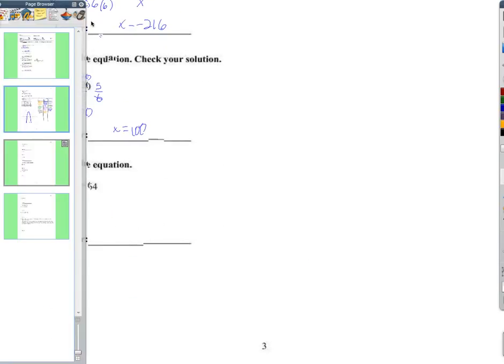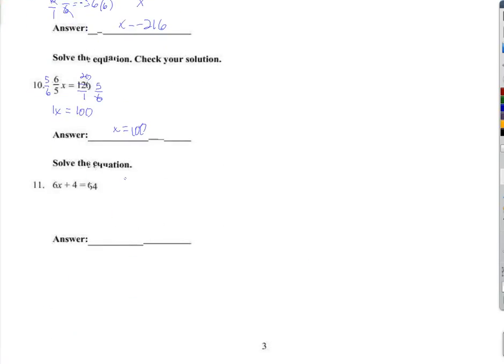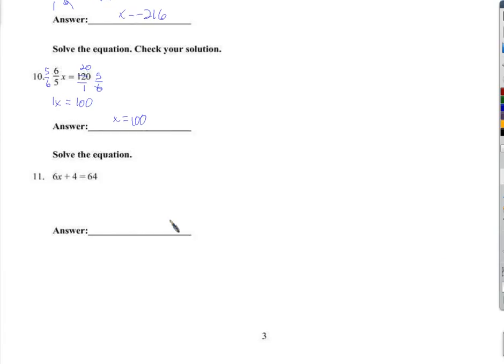Last one on this page, we have a two-step equation. First, let's get the 6x by itself. Let's leave the division for the very end. If you try to divide by 6 right now, there's more involved there than you are thinking, probably. If you divide this by 6, you'd also have to divide the 4 by 6. Let's not bother with that. Let's first subtract 4. Subtract 4. We get 6x equals 60. Divide by 6. And x equals 10.